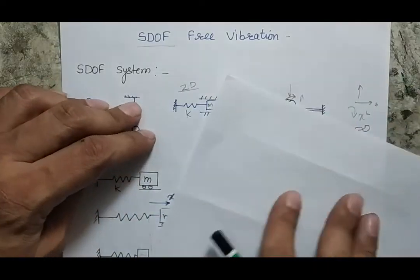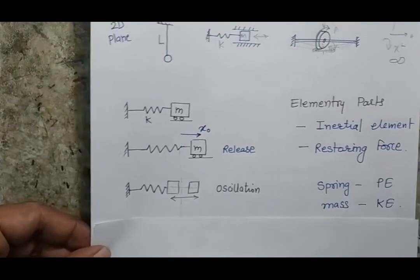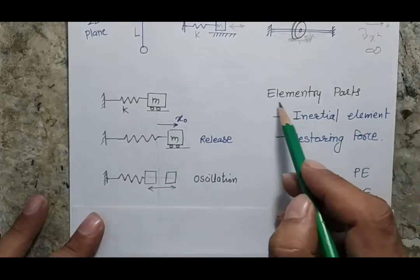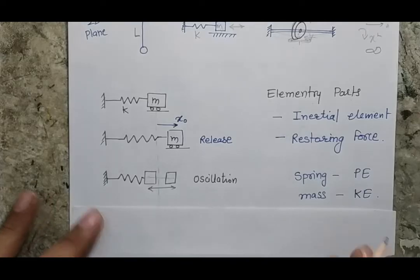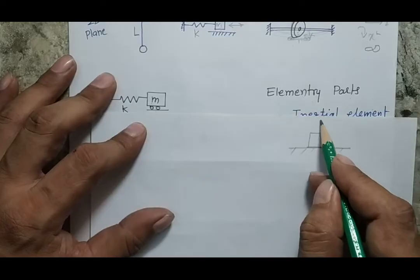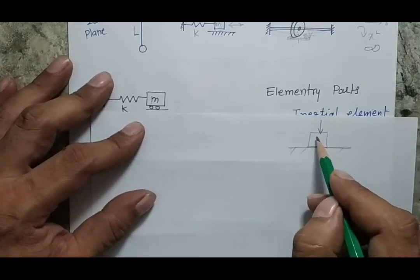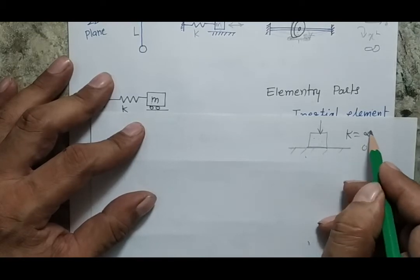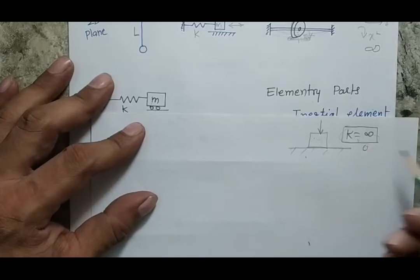Let me explain how to initiate free vibration. I am showing a system with a spring and a mass and describing the elementary parts of a vibratory system. Consider a rigid box on a rigid ground: if you apply a force and release it, it will not vibrate because the stiffness is infinite, meaning flexibility is zero. So flexibility is one important component required for vibration.